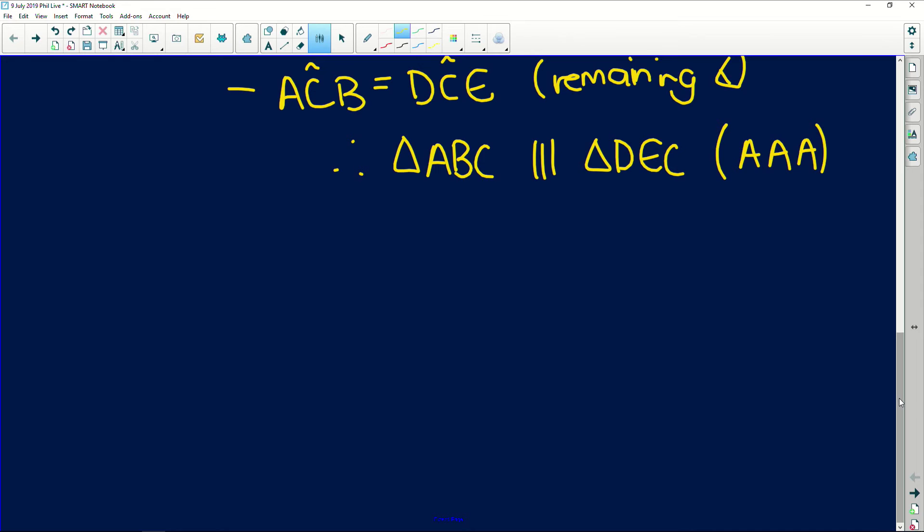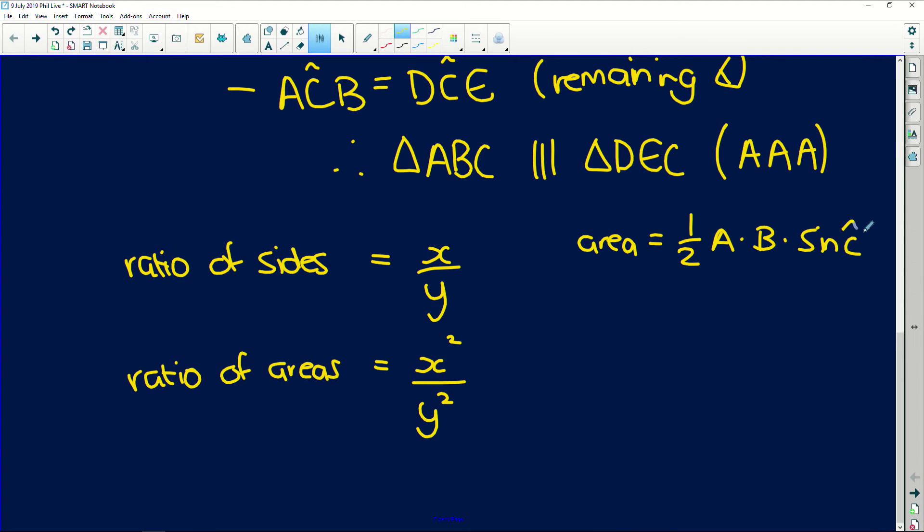And let's say the ratio is given by x, y, it only makes sense that the ratio of their areas is x squared over y squared. Why? Because, remember, area is equal to half one side multiplied by the other side multiplied by sine of C.